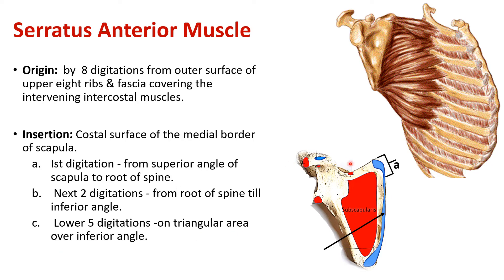The first digitation is attached from the superior angle of the scapula till the root of the spine, which is present on the dorsal surface of the scapula. The next 2 digitations are attached from the root of the spine till the inferior angle of the scapula. The remaining 5 digitations are attached on the triangular area over the inferior angle.